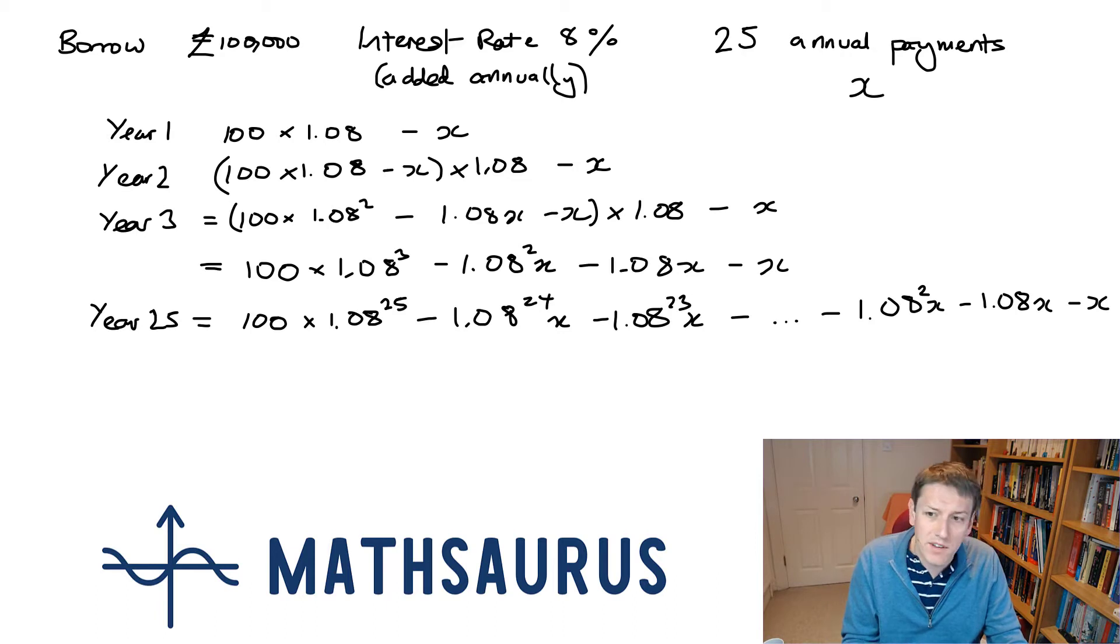But we've just made a payment of x here right at the end. And last year's repayment of x, if I invested it at 8%, would today be worth 1.08x. So if you like, if I hadn't made that payment last year, I would owe an extra 1.08 times x. If I hadn't made the payment two years ago, that payment of x two years ago at 8% interest in today's money is worth 1.08 squared times x.